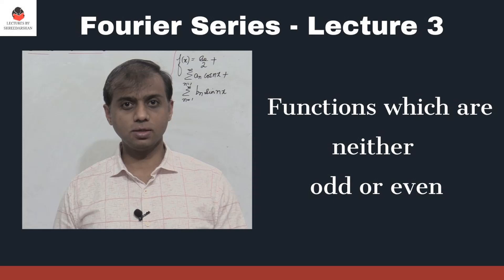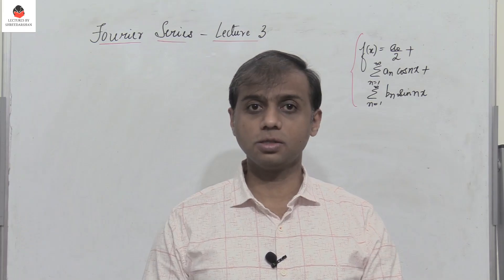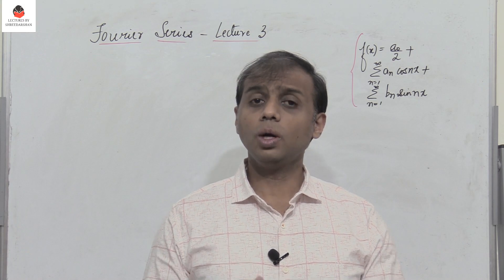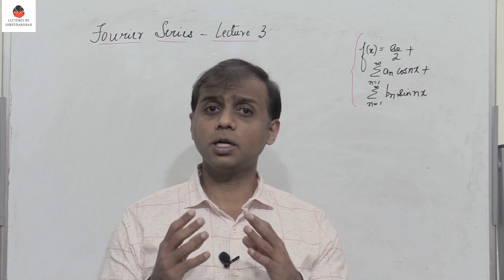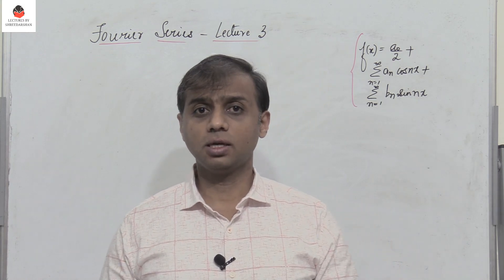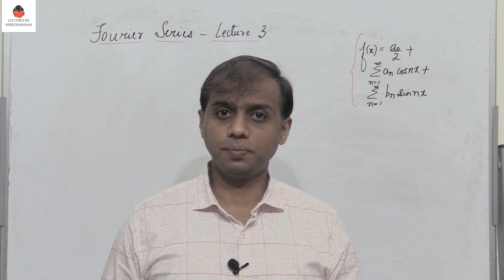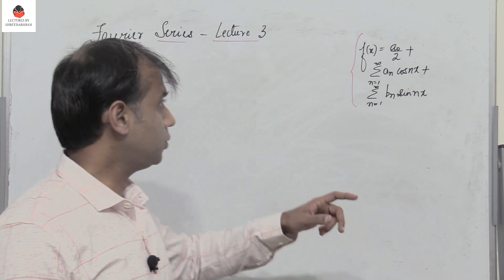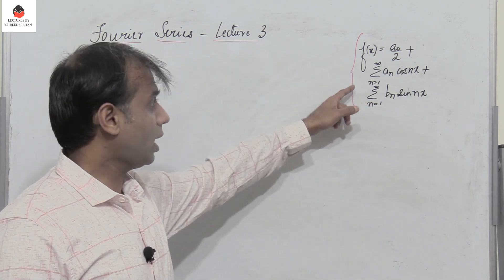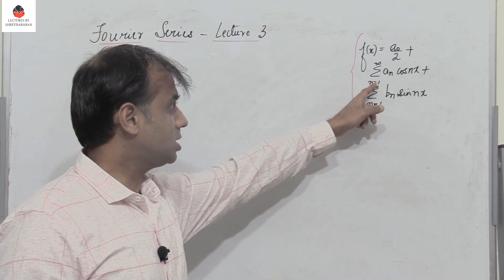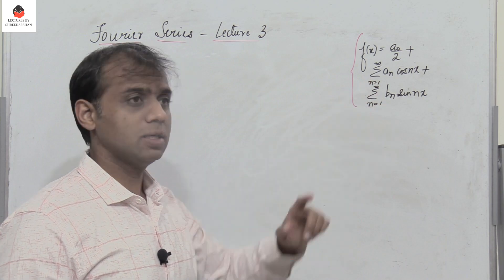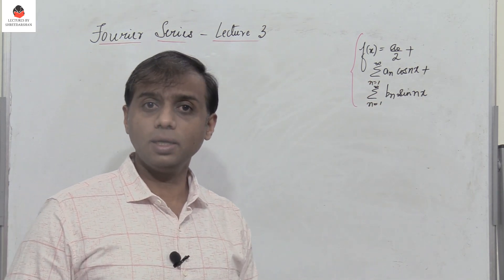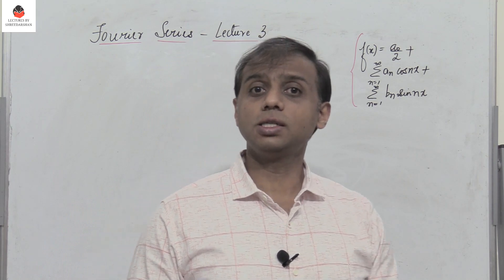In the previous two lectures we have considered functions which were either odd or even. Now, what happens if a function f(x) is neither odd nor even? In such a case we have to find a₀ as well as the coefficients aₙ and bₙ.